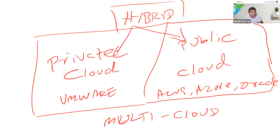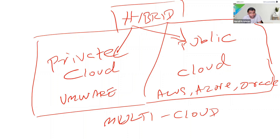You can relate multi-cloud to shopping. You first check Lazada, then check Shopee — sometimes the same product is cheaper on one platform. So you do comparison and choose the platform that offers a better price. That's exactly what multi-cloud is. An enterprise might choose AWS for web services, Oracle for database, Azure for testing, and Google for email.